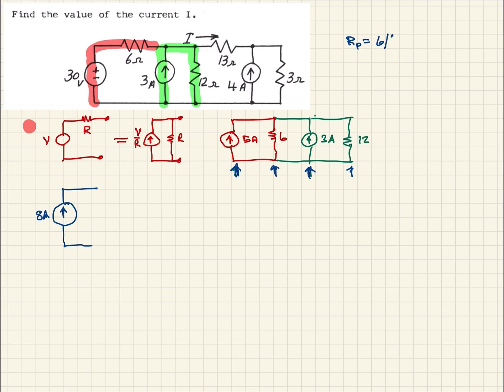Well, we know for the resultant resistance up here, that'll be 6 in parallel with 12. When we do that, it's going to be 6 times 12 over 6 plus 12. When we work that out, we get 4 ohms. So now this is a 4 ohm resistor.